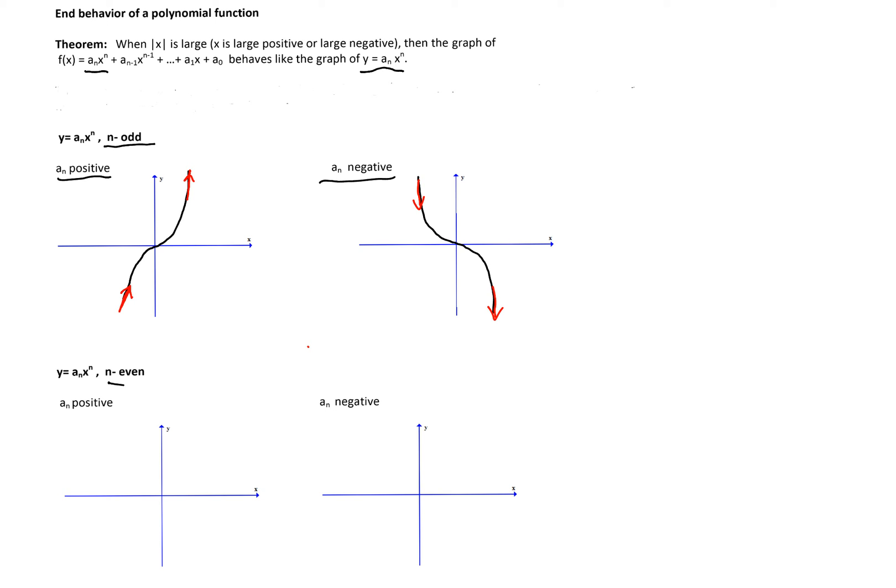When n is even and a_n is positive, the graph looks like a square function. So we'll start the graph going up and we'll have to end the graph of the polynomial function f(x) going up.